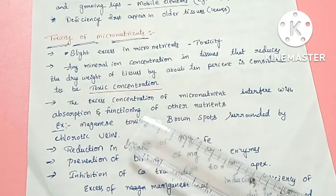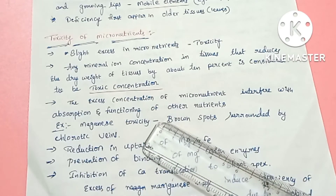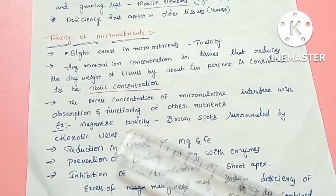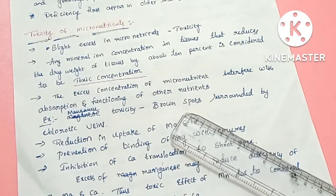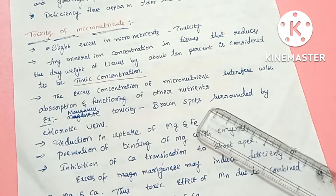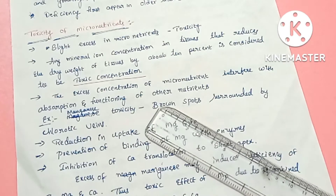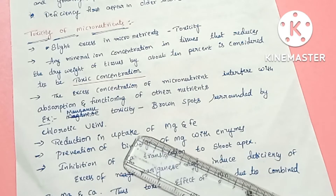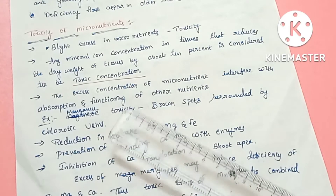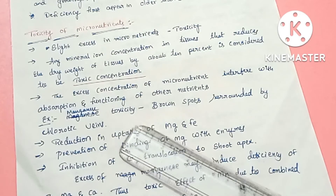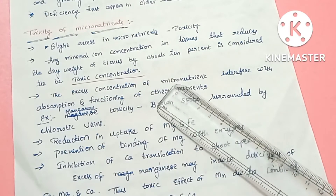Excess of one element can interrupt the absorption of other nutrients by using the same uptake pathways. For example, manganese toxicity causes brown color spots to form on leaves, and chlorotic veins appear where chlorophyll is removed, resulting in yellow color chlorotic veins.